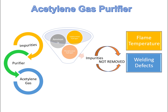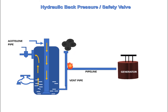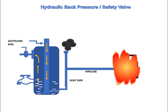Hydraulic back pressure or safety valve: During welding, due to backfire or nozzle hole blockage, high-pressure oxygen may enter the acetylene generator, leading to an explosion. To prevent this, a hydraulic safety valve must be fitted in the acetylene pipeline between the blow pipe and the generator.